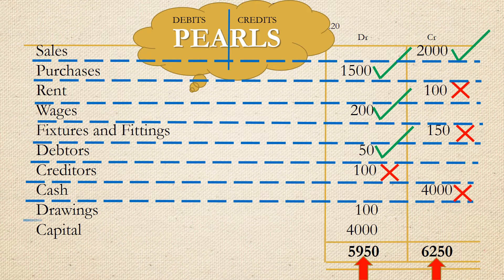Drawings are goods that are taken by the owner for personal use. They decrease the assets in the business, therefore they have a debit balance. Capital is a liability and it should have a credit balance and not a debit balance.